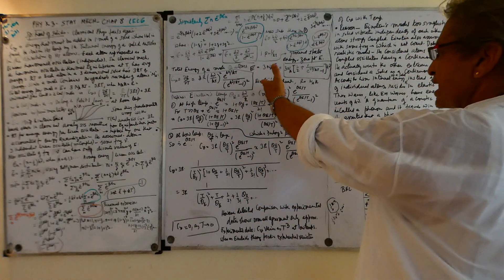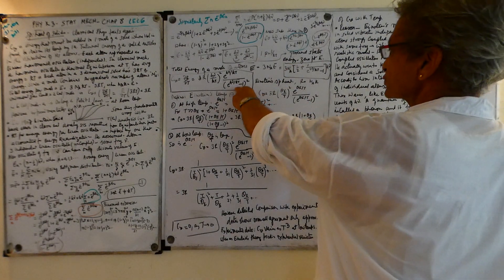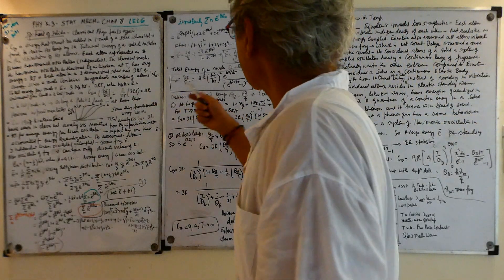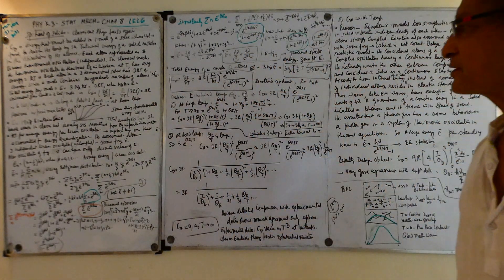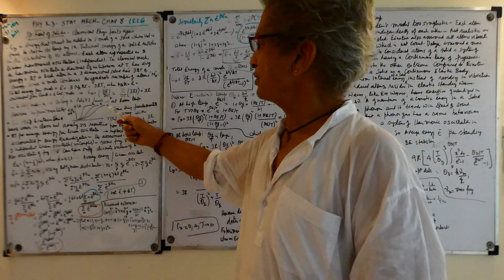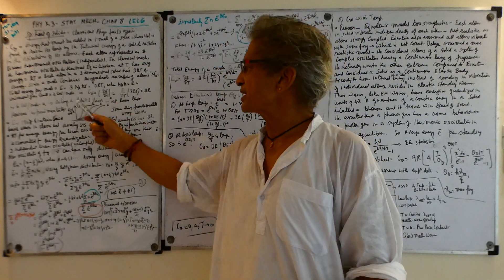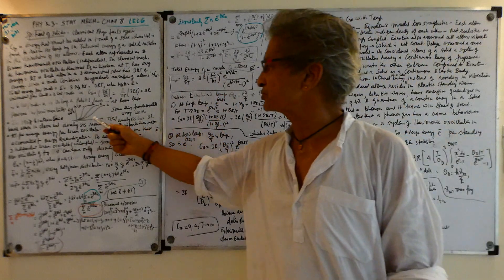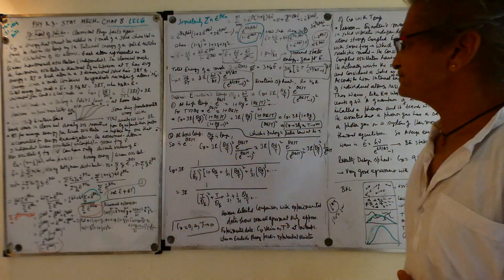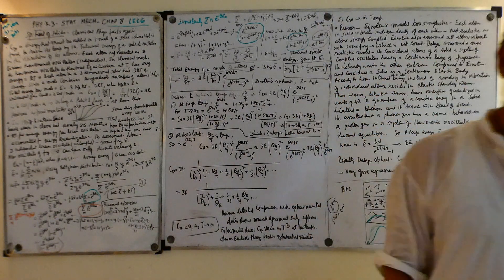This formula is the Einstein specific heat formula, and you can see it looks pretty different from the simple 3R — it has temperature dependence and everything. Let's see how it matches the Dulong-Petit law at high temperatures, where it should go to 3R, and at low temperatures, if this is correct, it should go to zero.